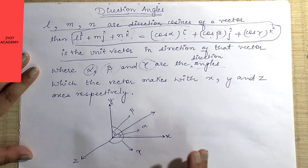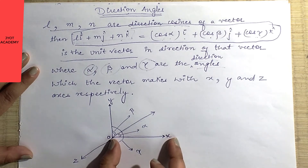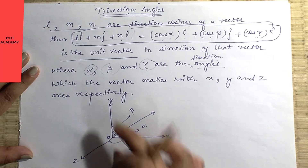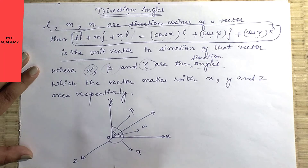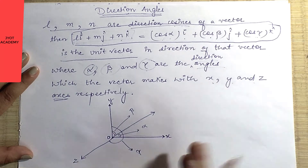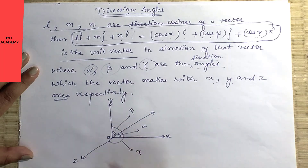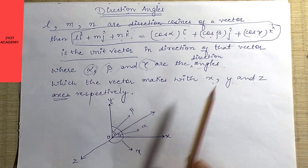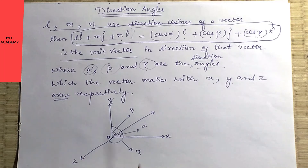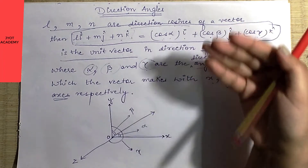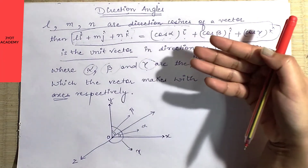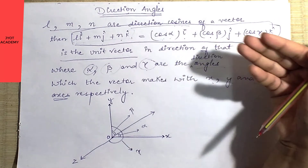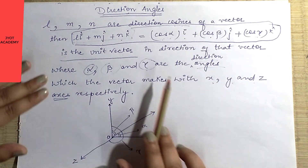What we need to show is that the vector is equally inclined to axes OX, OY, and OZ. The diagram will be drawn accordingly — with the three axes x, y, z. The angles formed with these axes are cos α, cos β, cos γ. These direction angles must come out equal — that is what question 14 asks us to show.